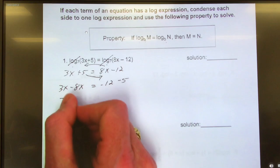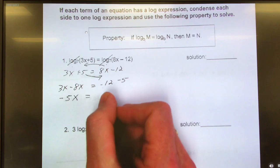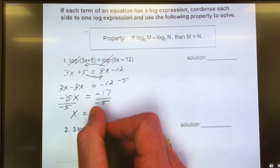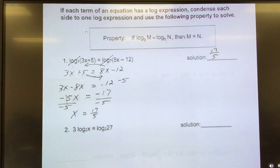3x minus 8x is negative 5. Negative 5x equals negative 12 minus 5 is negative 17. How do I solve for x? Divide by negative 5. And you can leave it a fraction. That's a positive 17 fifths.